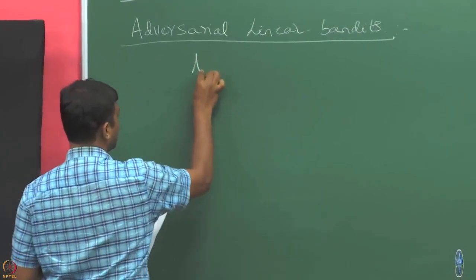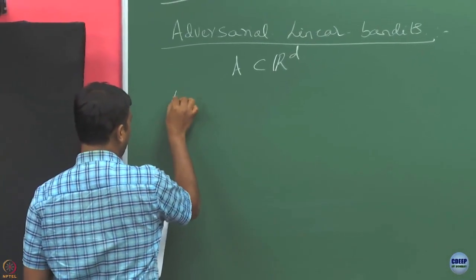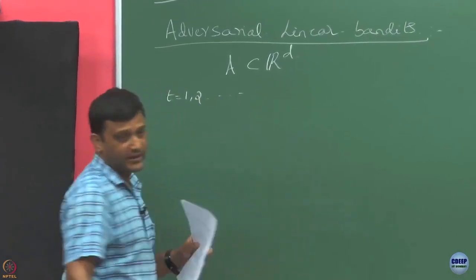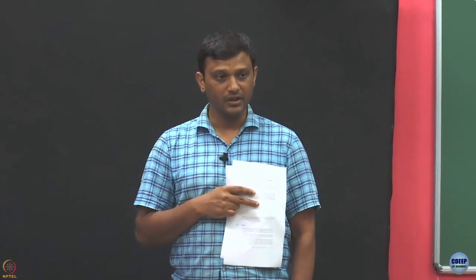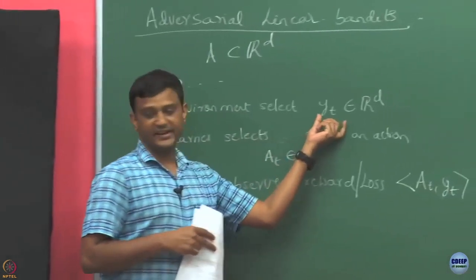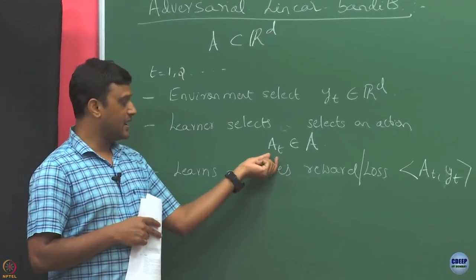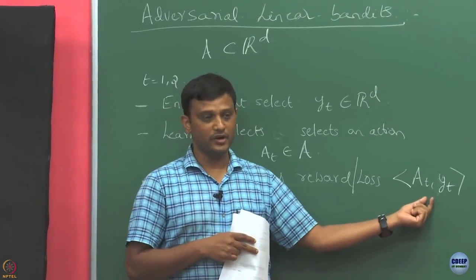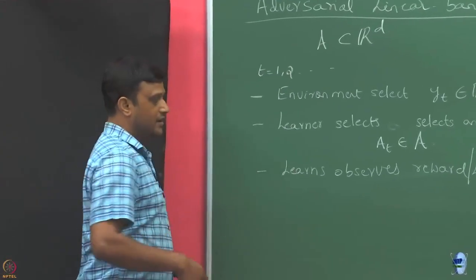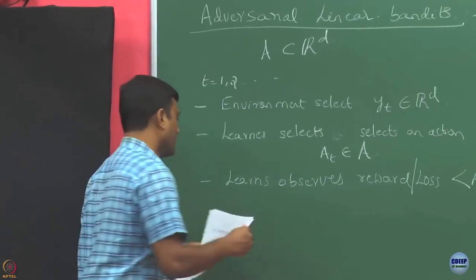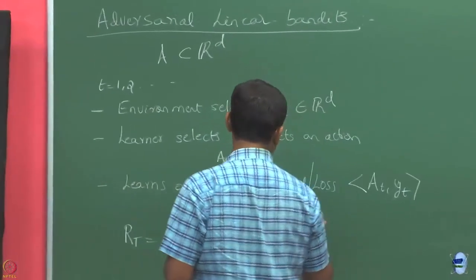Let us say you have an action set A which is a subset of R^d. In each round, the sequence of Y_t is selected by the environment. You have to select an arm in that round, and by selecting arm A_t, you are going to get a reward which is the inner product of A_t and Y_t. Your goal is to maximize your cumulative reward — or equivalently, we will consider the loss setting, so this is a loss.